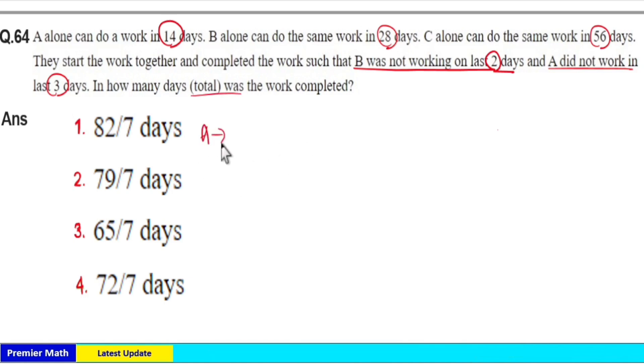Here A can complete a work in 14 days, B can complete it in 28 days and C can complete it in 56 days. All are doing the same work, take the LCM. LCM is 56. 14 goes 4 times in 56, 28 goes 2 times in 56, 56 goes 1 time in 56.